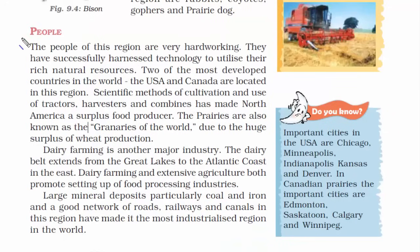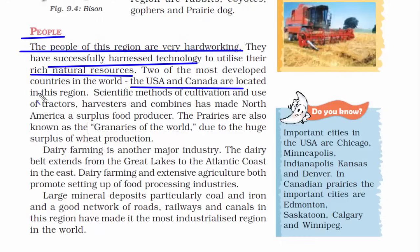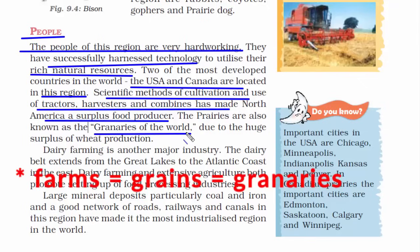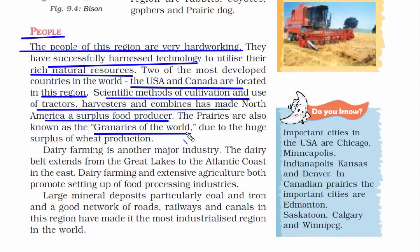Now let's read about the people of this region. The people are very hard working. Since America and Canada are developed nations, they have successfully harnessed technology to utilize their natural resources. Since it's a grassland with huge farms, scientific methods of cultivation — the use of tractors and harvesters — have made America a surplus food producer. The other name given to these prairies is the granaries of the world. They have huge farms producing grains, and a huge surplus production of wheat.